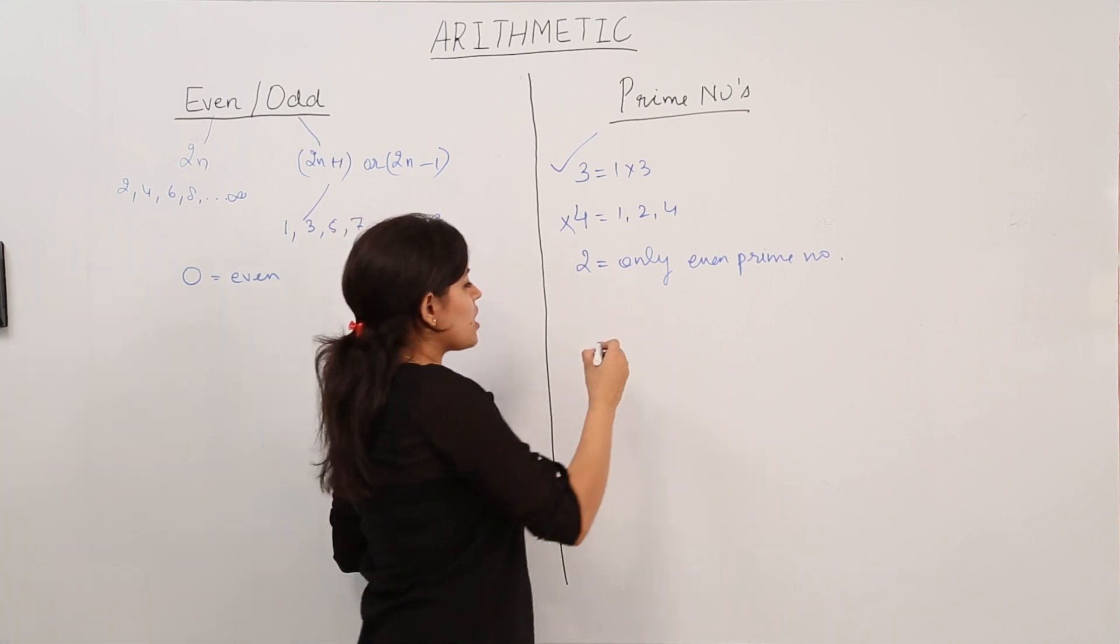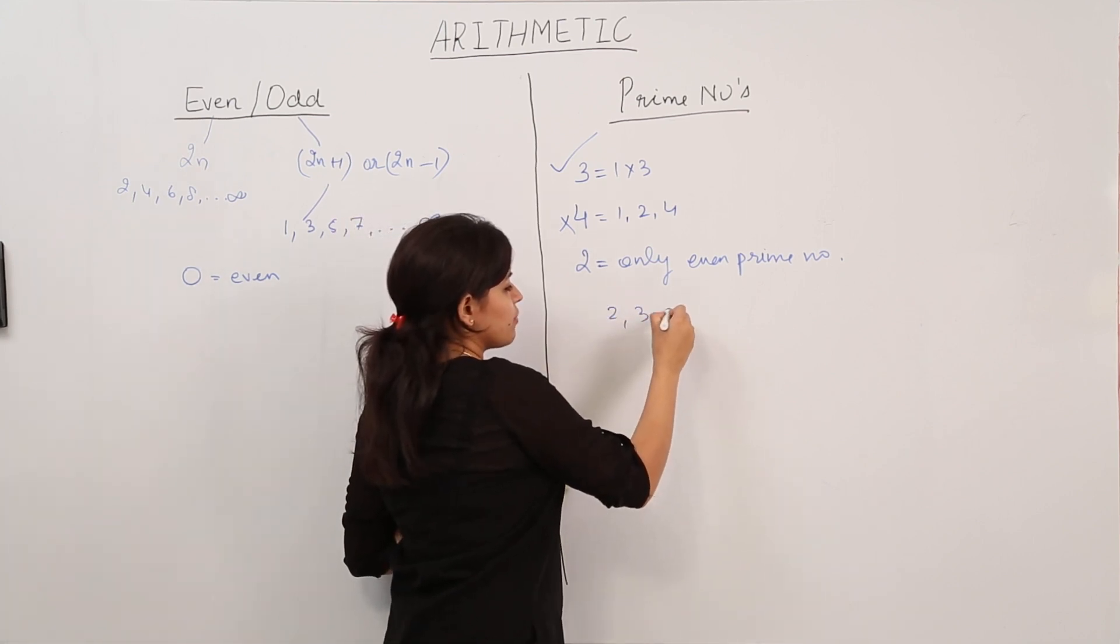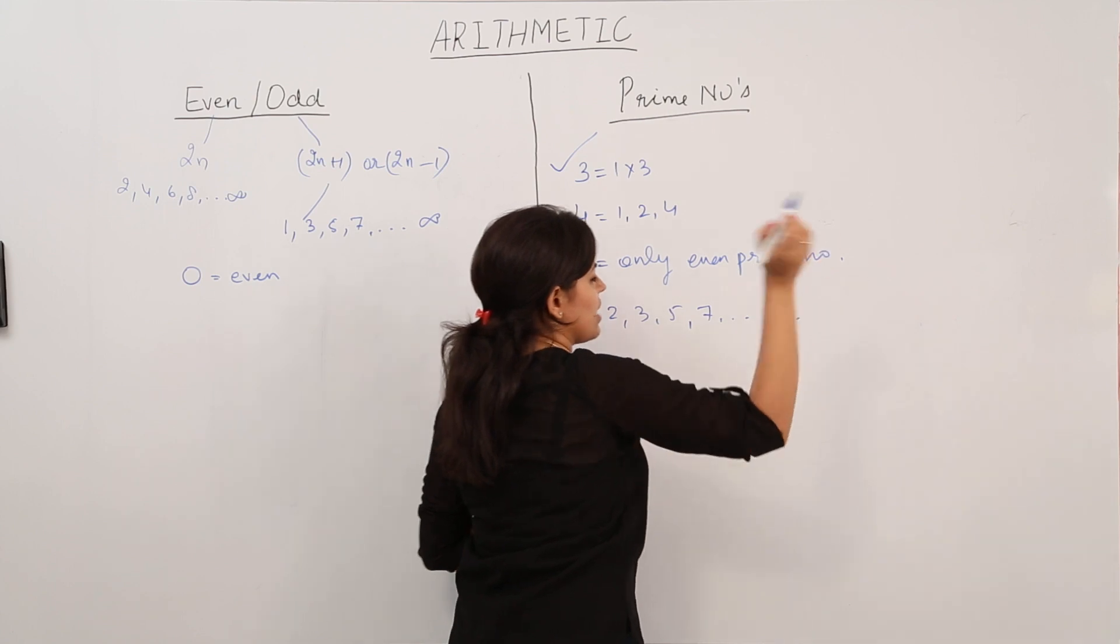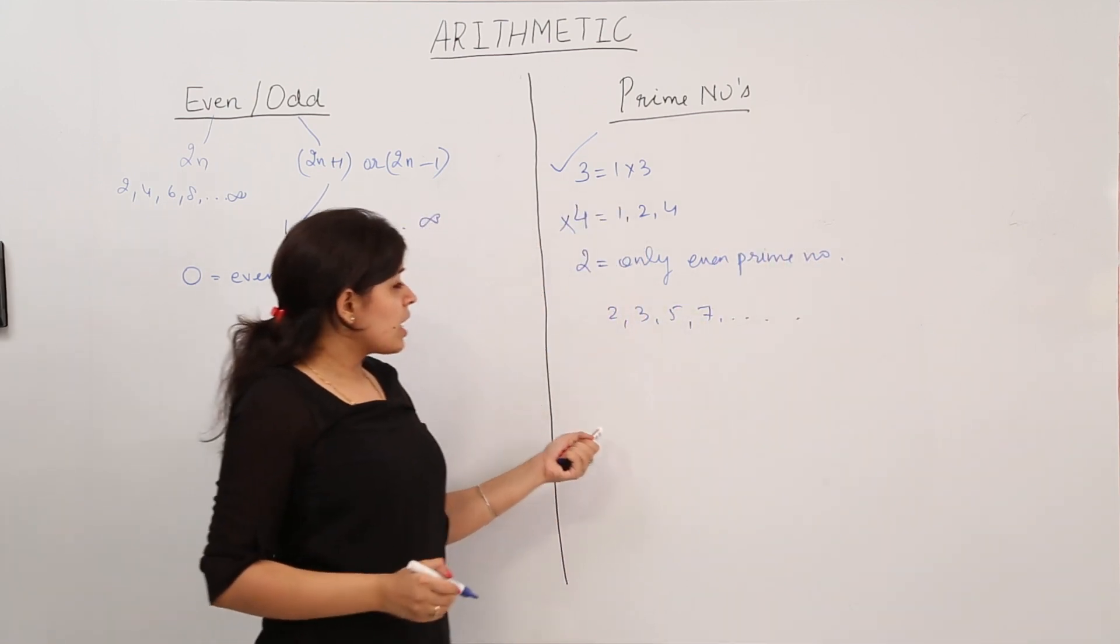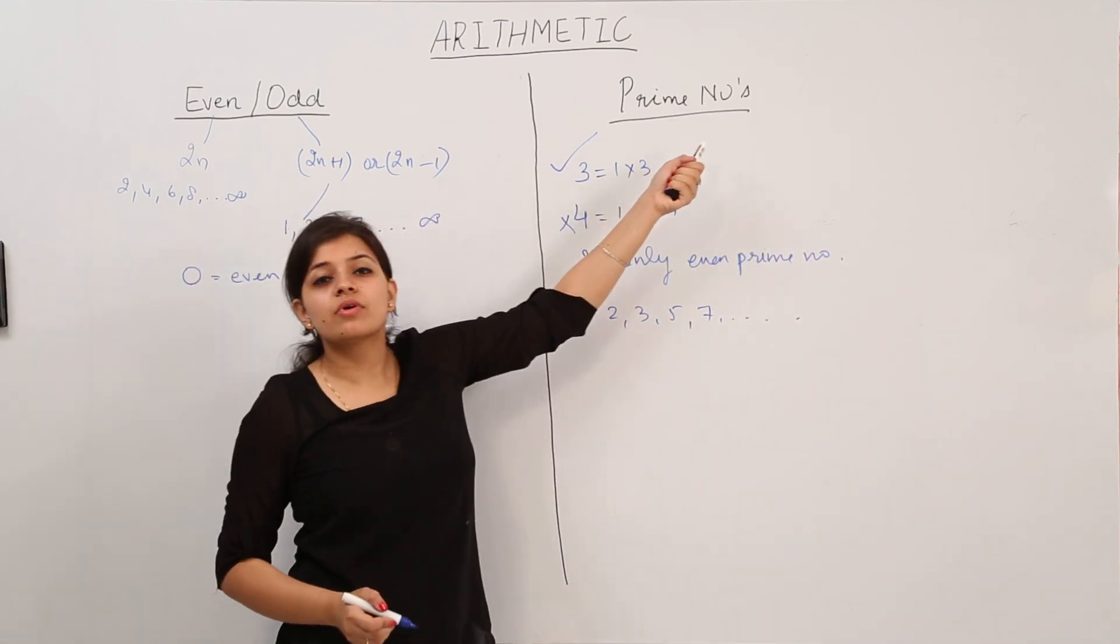All prime numbers include 2, 3, 5, 7, and so on. Now 4 is not a prime number. Then what is it? 4 comes in a set which is known as composite numbers.